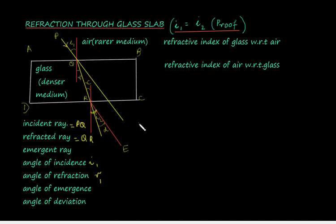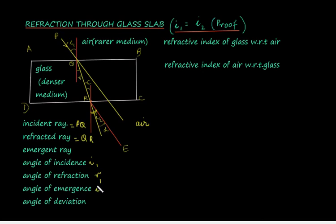The ray passes through the glass slab and strikes the interface DC, after which it emerges into air. This is the incident ray inside the glass medium and the angle of incidence here is r2. It is moving from the denser medium to the rarer medium, so it moves away from the normal by the principle of refraction. i2 is the angle of emergence, and r2 is equal to r1 by the principle of geometry.